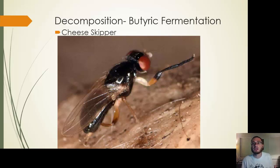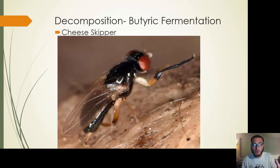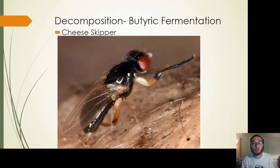In forensic entomology, there are different types of flies — like cheese skippers and blowflies — and they play different roles, arriving at different times during decomposition.